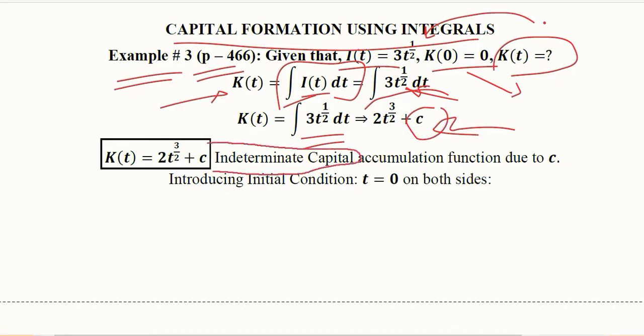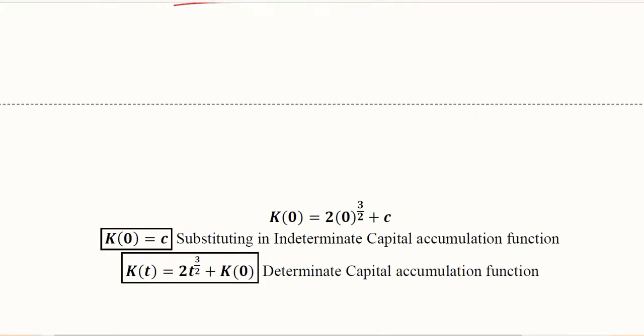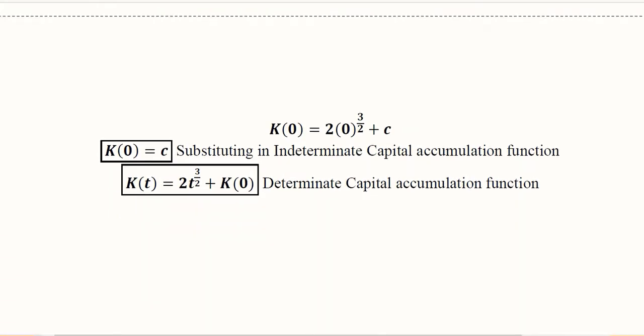For that, we introduce the initial condition. We have the initial condition t = 0, and the value is K(0) = 0. So when we solve it, this becomes 0, and further this also becomes 0, so c comes on the right-hand side.